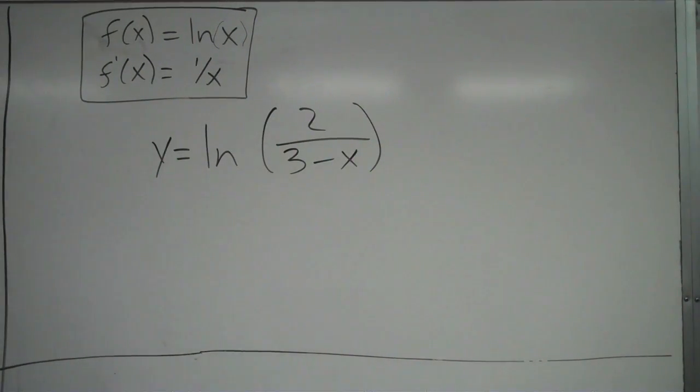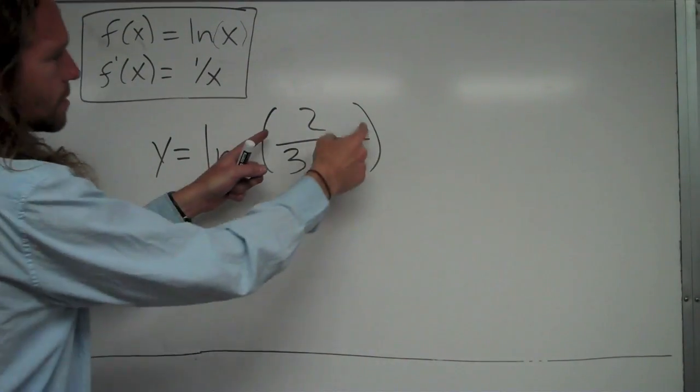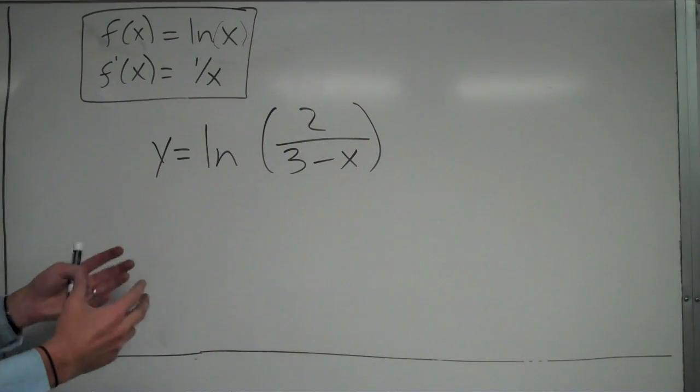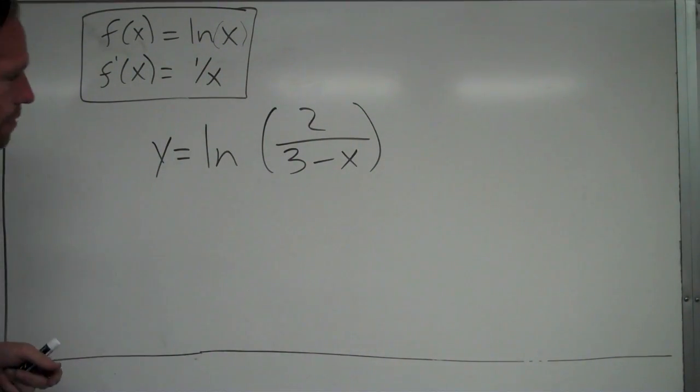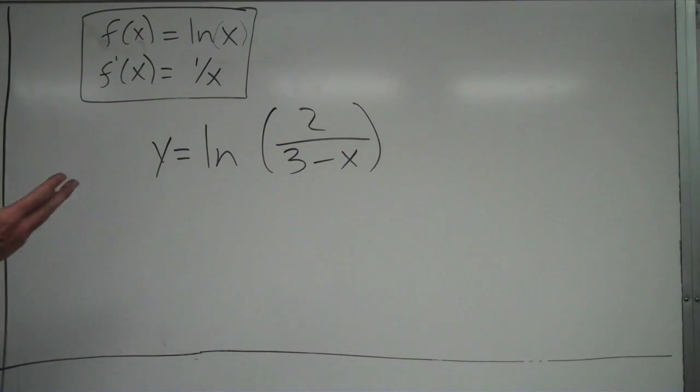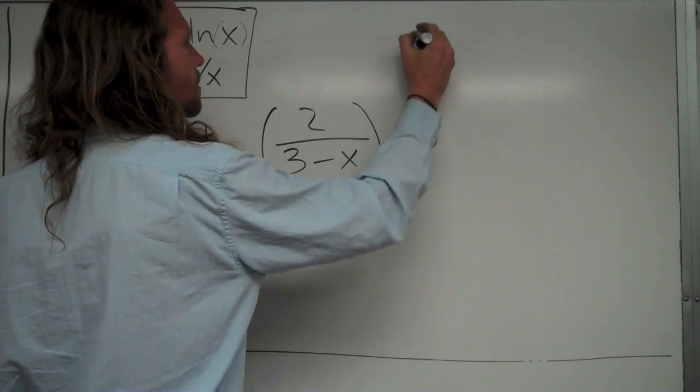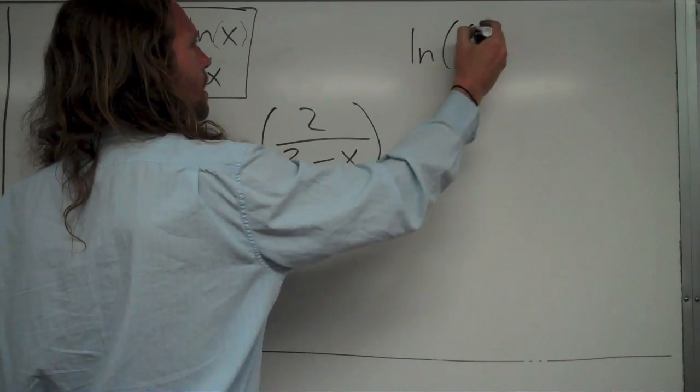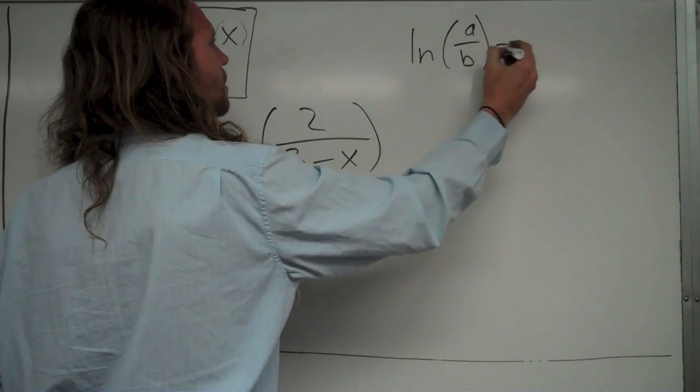All right. Here's another problem where, you know, I could definitely apply this rule right from the start to do 1 over what's inside. So I'd have 1 over 2 over 3 minus x times the derivative of what's inside, which maybe I could apply the quotient rule there. So, you know, it'd be doable, but I'd look and I'd be like, eh, it'd be kind of nasty.